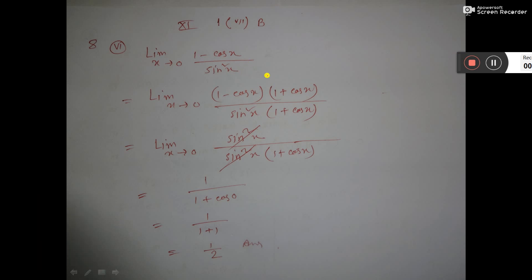For this one, I multiply both numerator and denominator by 1 plus cos x. In the numerator, you can apply the a minus b into a plus b formula, which gives a square minus b square.